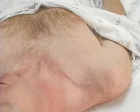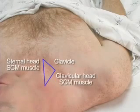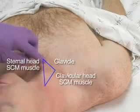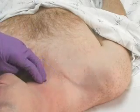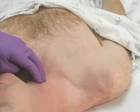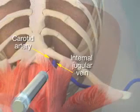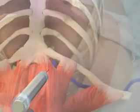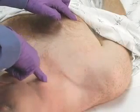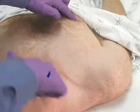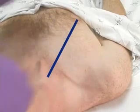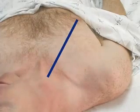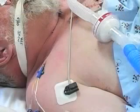Identify the triangle formed by the sternal and clavicular heads of the sternocleidomastoid muscle and the clavicle. Determine the location of the carotid pulse — the path of the vein runs just lateral to the carotid artery. The needle will enter the skin at the apex of this triangle just lateral to the carotid pulse and will be aimed toward the ipsilateral nipple. Following these landmarks can be challenging in the obese patient.